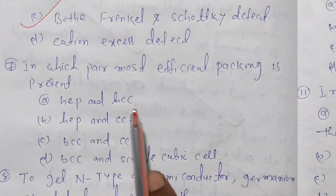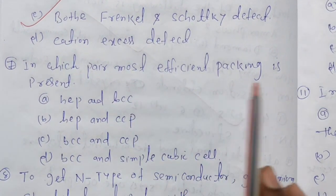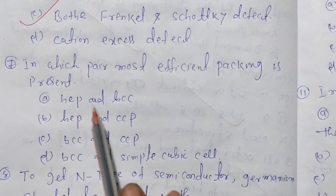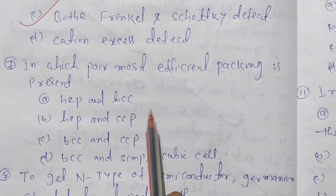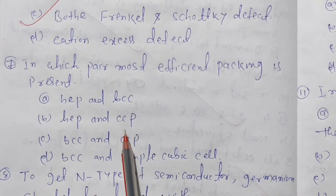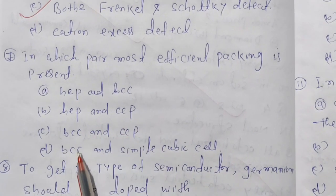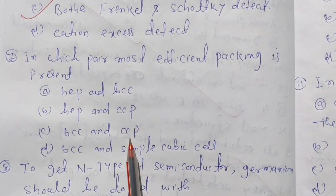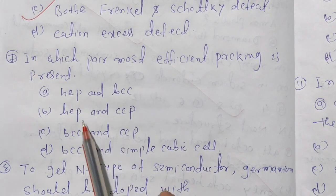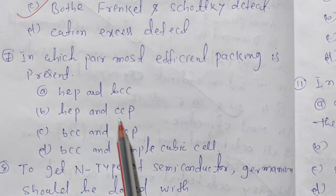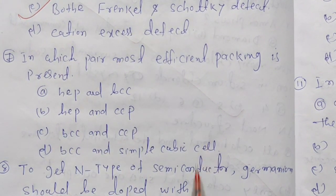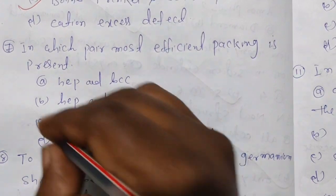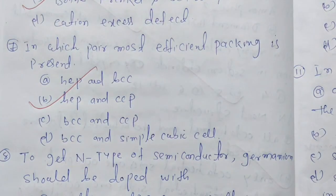In which pair is the most efficient packing present? Either HCP, BCC, SCP, CCB, or CCP. HCP and CCP have the most efficient packing present.